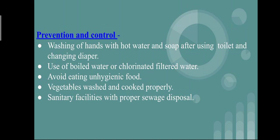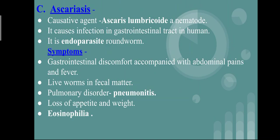For prevention and control of amoebiasis: wash hands with hot water and soap after using toilets and changing diapers. Drink boiled, chlorinated, and filtered water. Avoid eating unhygienic food. Vegetables must be properly washed and cooked. Proper sanitary facilities must be maintained, including sewage disposal, which helps in prevention and control of the disease.